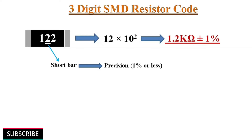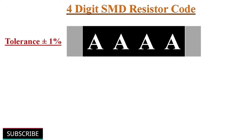In this way, we can decode the resistance value of the 3-digit coding system. Now let's look at the 4-digit SMD resistor coding scheme.